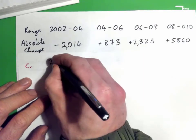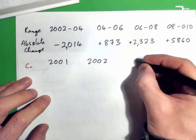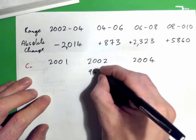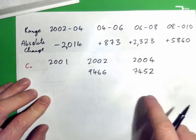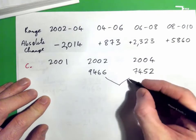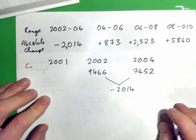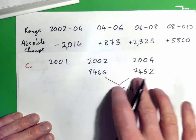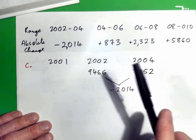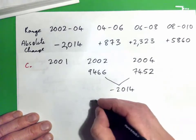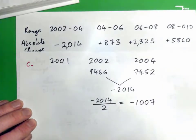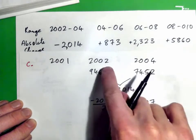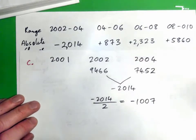We need to estimate 2001. In 2002 the complaints were 9,466 and in 2004 they were 7,452. From 2002 to 2004 that was a decrease of 2,014 over a two-year period. To get the average change per year we take 2,014 and divide by 2, giving us 1,007 per year.